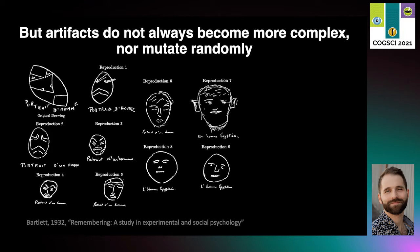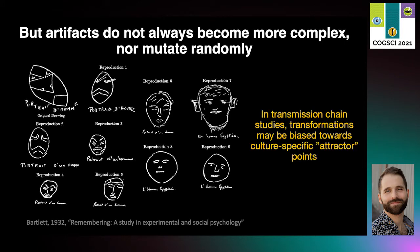In one transmission chain experiment, Bartlett presented a first participant with an abstract image in the top left and asked the participant to reproduce it from memory. Then a second participant saw the image created by the first one and reproduced it from memory, and so on. As you can see, the abstract image is quickly transformed into a simple cartoon face, after which the general features remain quite stable. Work like this has been taken as evidence that individuals have particular cultural schemas that bias transmission towards culture-specific attractor points.